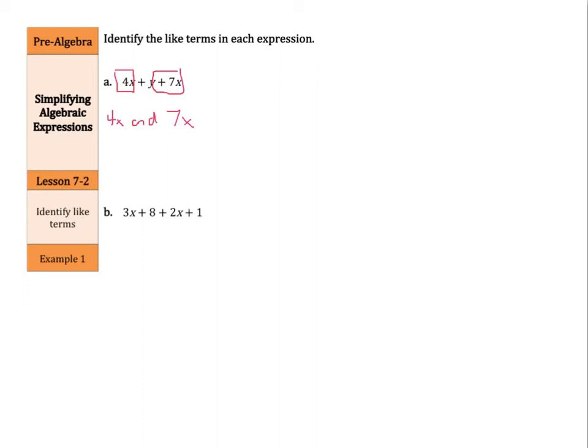Now, the y has nothing, sadly, so we're not going to even list that. There's no like terms to group that with. As we move on to b, we have 3x as our first term, so I'll put a box around 3x. Any other terms in this with an x? Yes, the 2x. So, so far, I have 3x and 2x.